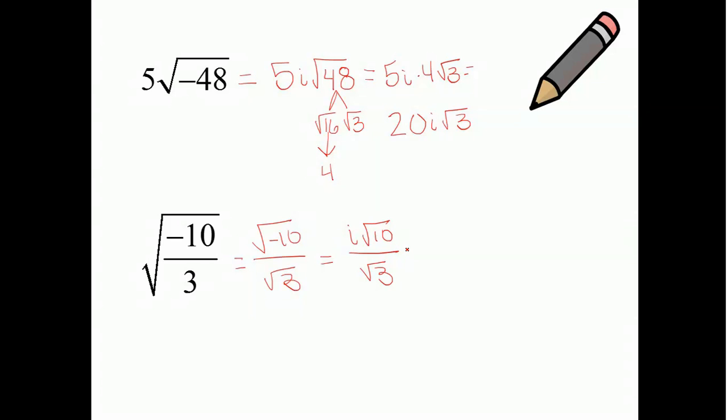Remember, got to rationalize our denominator. So, I'm going to multiply by the square root of 3 on the top and the bottom. So, I'm going to get i square roots of 30 all over square root of 9, which is 3. And, that's my final answer for that particular problem.